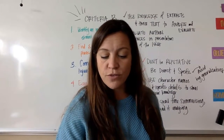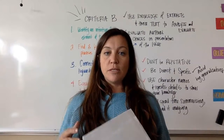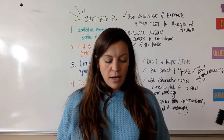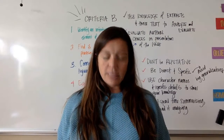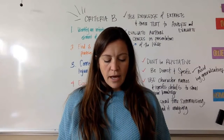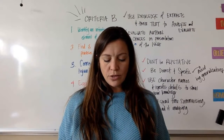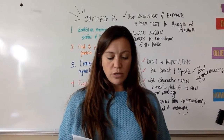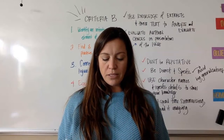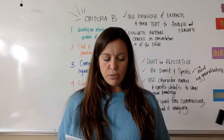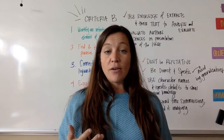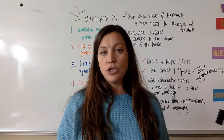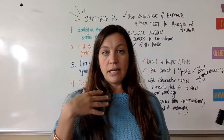So first and foremost for Criteria B, it's important that we first take a moment to look at that element on the rubric and determine what exactly they're looking for. Criteria B is titled Analysis and Evaluation, and it says: how well does the candidate use his or her knowledge and understanding of each of the extracts and their associated work or texts to analyze and evaluate the ways in which authorial choices present the global issue. I always try to break criteria down into the simplest language so I understand what I'm meant to be doing.